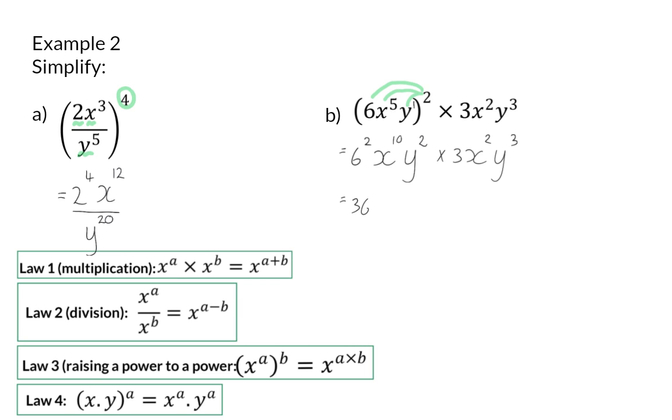So now here we have 36x to the power of 10 times y to the power of 2 times 3x to the power of 2 times y to the power of 3. Next, I can multiply the constant values as normal. And 36 multiplied by 3 is 108.